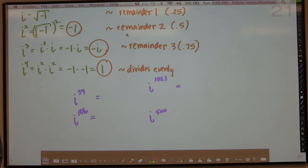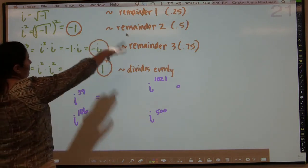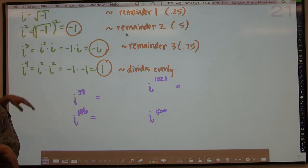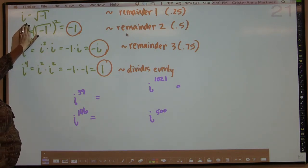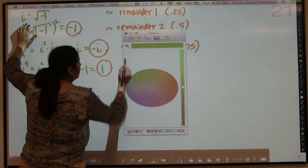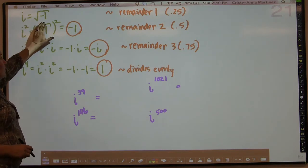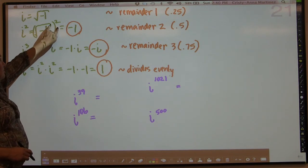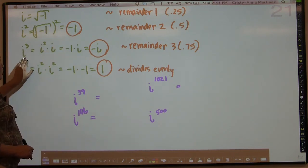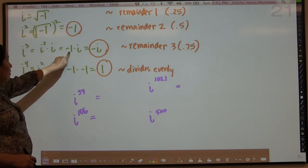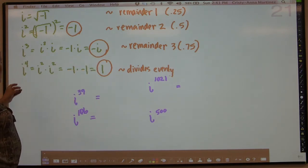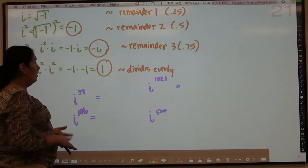Another thing I wanted to show you with these i's is how cool they are. You can actually get increasing exponents for i. So i to the first power is the square root of negative 1. Then i squared would be the square root of negative 1, squared — the square roots cancel and you get negative 1. i cubed would be i squared times i, which is negative 1 times i, giving you negative i. And i to the fourth can be written as i squared times i squared, which is negative 1 times negative 1, which equals 1.